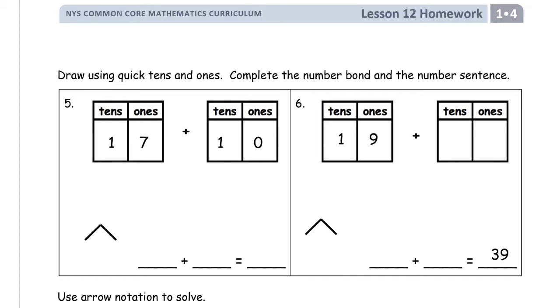So now we've given in place value charts, they've told us what to draw here. We need 1 ten and we need 7 ones: 1, 2, 3, 4, 5, 6, 7. And then plus 10 is just a ten. So there's our parts: 17 and 10.